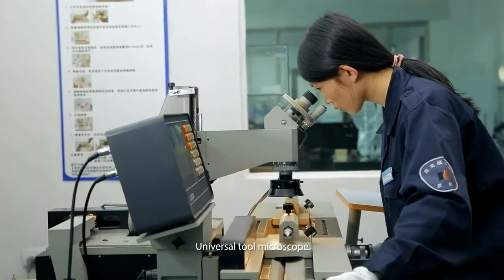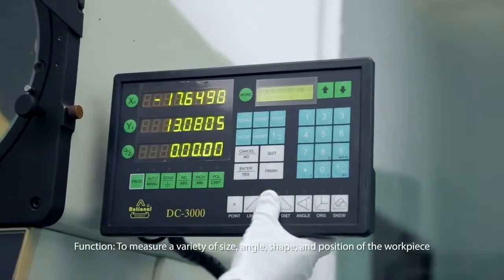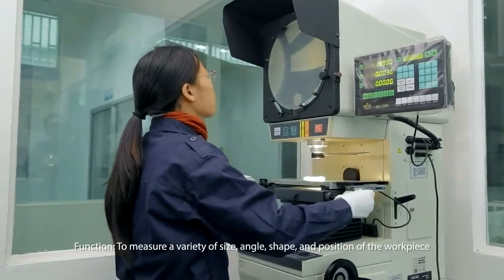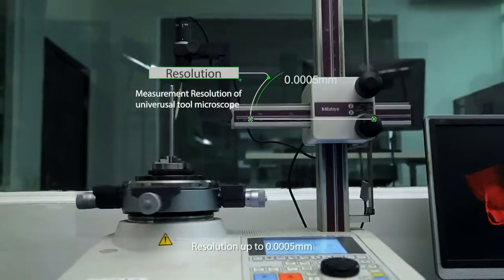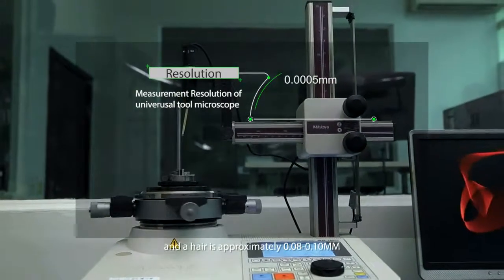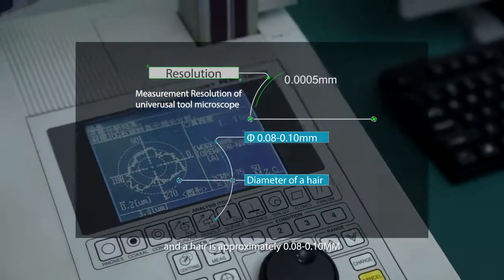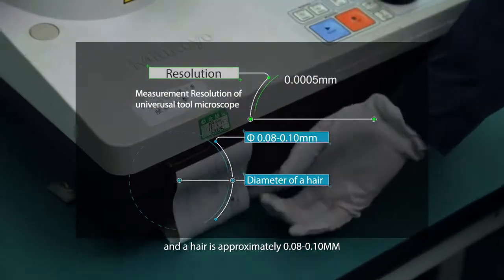Universal Tool Microscope function: to measure a variety of size, angle, shape, and position of the workpiece. Resolution up to 0.0005 mm, and hair is approximately 0.08 to 0.10 mm.